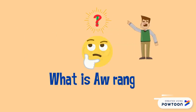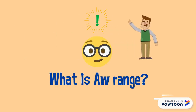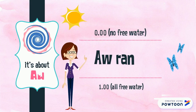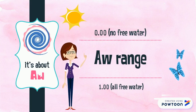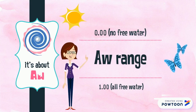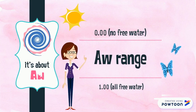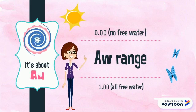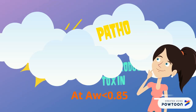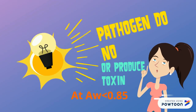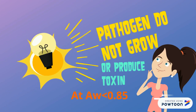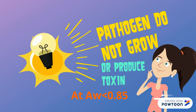What is the water activity range? There is no free water at 0.00 and all free water at 1.00. Pathogens do not grow or produce toxins at a water activity below 0.85.